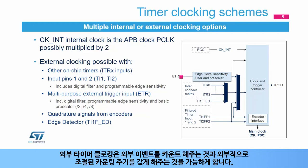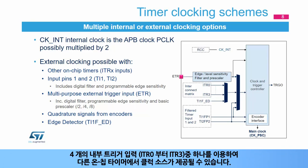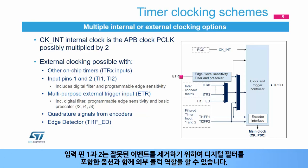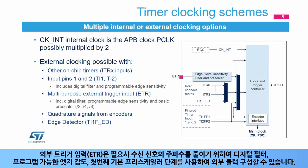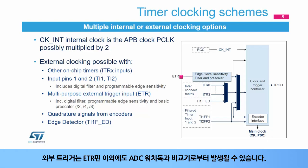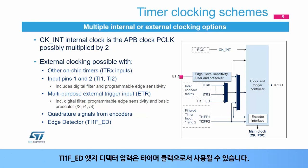External timer clocking makes it possible to count external events or to have a counting period externally adjusted. The clock source can be provided by other on-chip timers using one of the four internal trigger inputs, ITR0 to ITR3. Input pins 1 and 2 can also serve as external clocks, with the option of including digital filters to remove spurious events. The external trigger input ETR can be configured as an external clock with a digital filter, programmable edge sensitivity, and a first basic prescaler stage to reduce the frequency of incoming signals if needed.